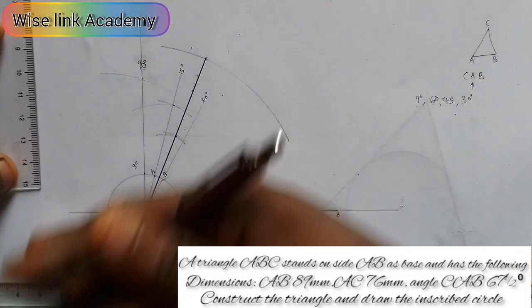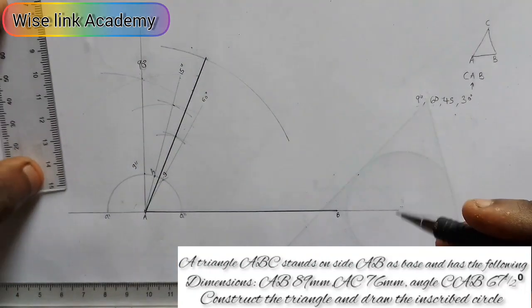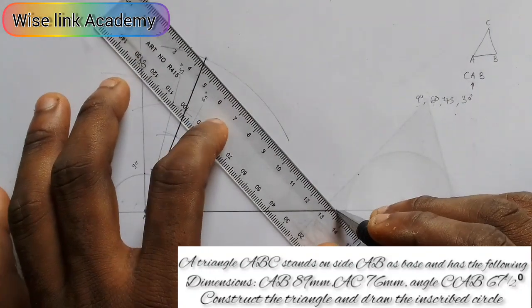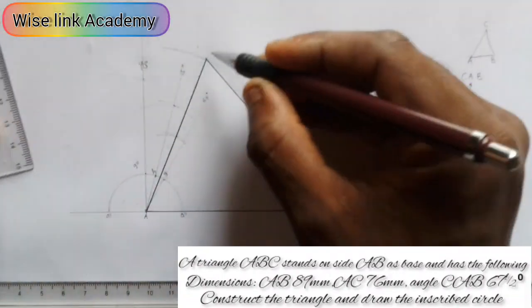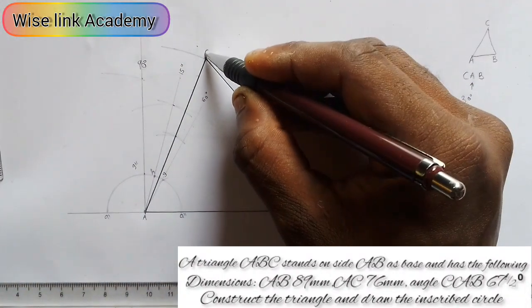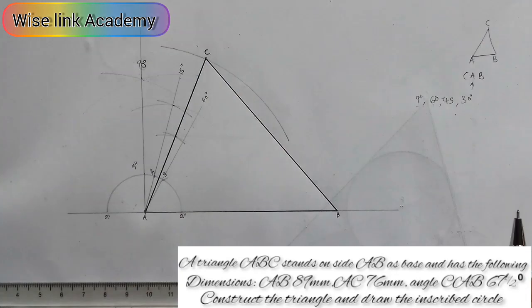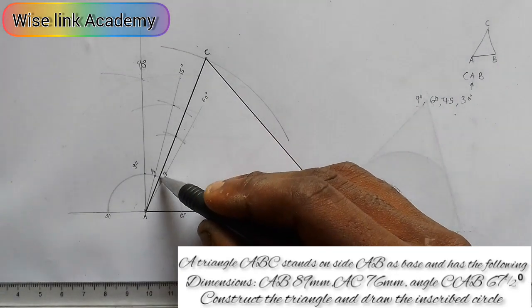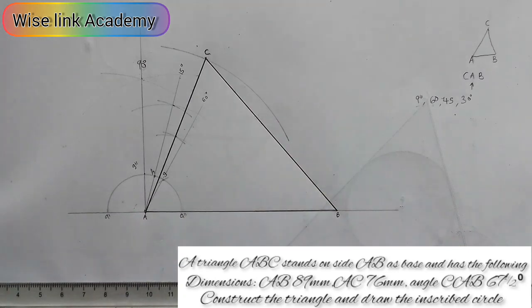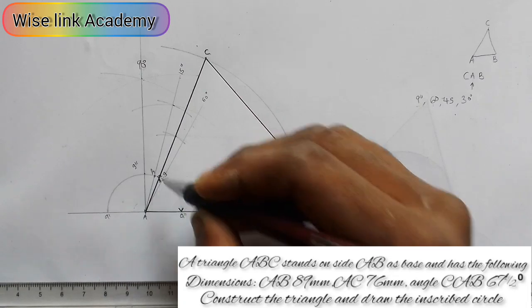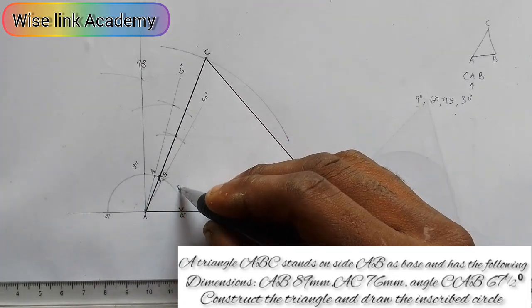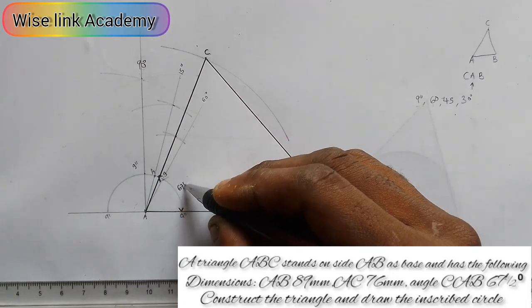Taking that line and connecting point B to that point — this is my point C. The angle between this line and the base line is 67.5 degrees.